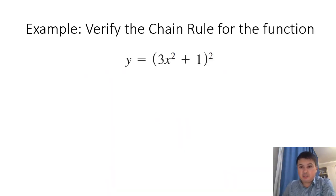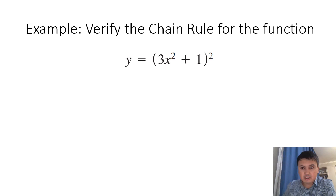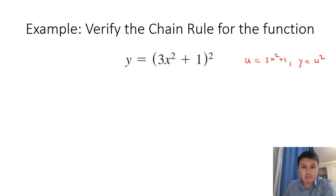Let us verify the chain rule. We're not going to prove the rule itself, but for this particular example we'll see if the rule is correct. This is a composition: there is a squaring function and then the 3x² + 1 function. If we set u = 3x² + 1, then y = u². We would like to take the derivative dy/dx. By the chain rule, this is dy/du times du/dx.